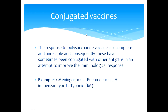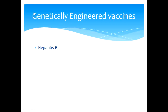Conjugated vaccines: the response to polysaccharide vaccines is incomplete and unreliable, and consequently these have been conjugated with other antigens to improve the immunological response. Examples include meningococcal, pneumococcal, Haemophilus influenzae type B, and typhi — particularly intramuscular. Genetically engineered vaccines: an example is hepatitis B.